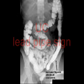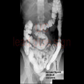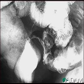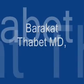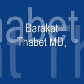Last but not least, based on imaging we can appreciate the pipe sign, which is highly characteristic of ulcerative colitis. On the other hand, what we call the narrowing or string sign is highly associated with Crohn's disease.